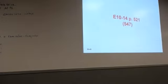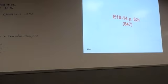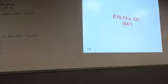So A says McHale Corporation redeemed $140,000 face value, 9% bonds on April 30, 2017, at 101. The carrying value of the bonds at redemption date was $126,500. The bonds pay annual interest, and the interest payment due on April 30 has been made and reported. So we're just dealing with the bond redemption part.